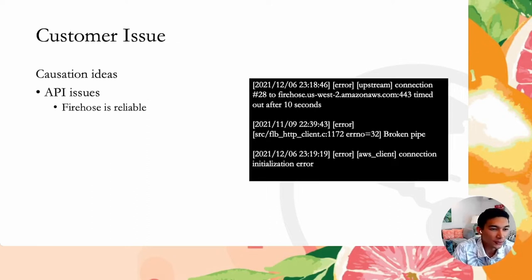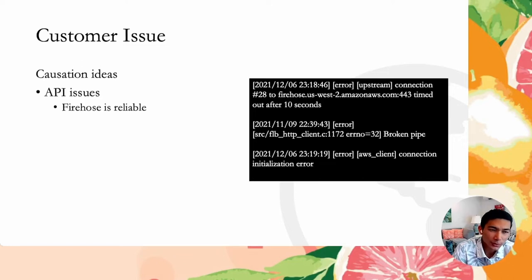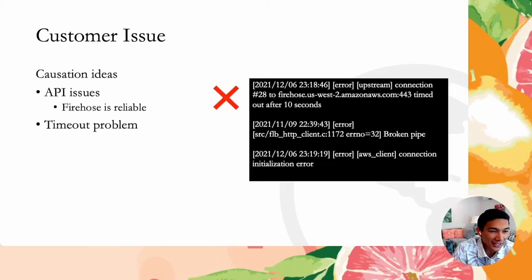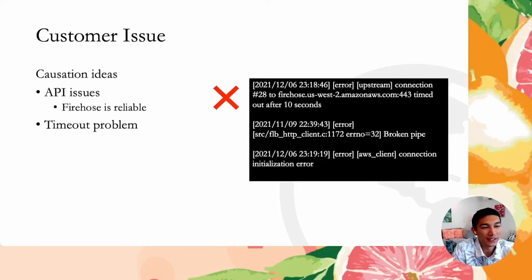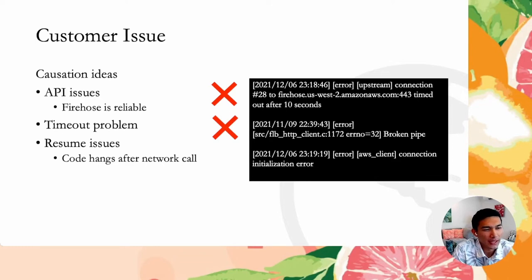We took to the whiteboard trying to figure out what could be causing these problems. At first we thought maybe it was API issues — maybe the place we're sending our logs, like Firehose, was having network problems. But we realized that other customers use Firehose without Fluentbit and they're not seeing these problems, so we ruled that out. The second hypothesis was a timeout problem — maybe Firehose is working but we're just not waiting long enough. But the errors clearly indicate it's taking 10 seconds plus, and we verified Firehose does not take 10 seconds to complete.